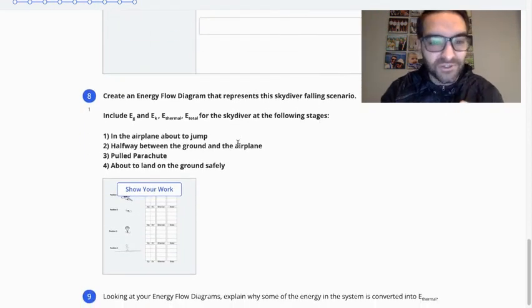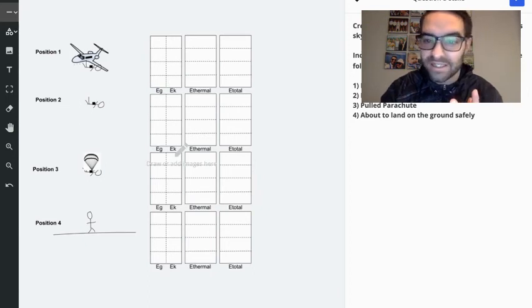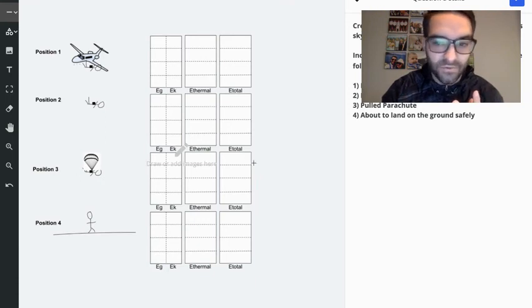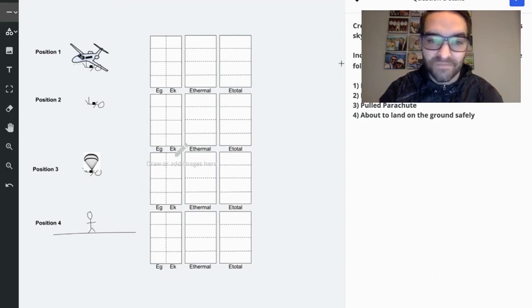Then I'm going to challenge us to create an energy flow diagram that's going to represent the skydiver's fall. And so I've created this template for you. Position 1, what does it look like in position 1? Position 2, the person is halfway between the ground and the airplane. Position 3, they just pulled the parachute, and they're obviously lower to the ground. And then position 4, it's drawn poorly, but they're just about to land on the ground. So they haven't landed and come to a complete stop. They're just about to land. And so I want you to think about this. And so just a refresher, you're going to have potential energy, kinetic energy, thermal energy. We haven't talked much about that, but I'm going to challenge you to try to think about where does that thermal energy come from? That's heat, right?